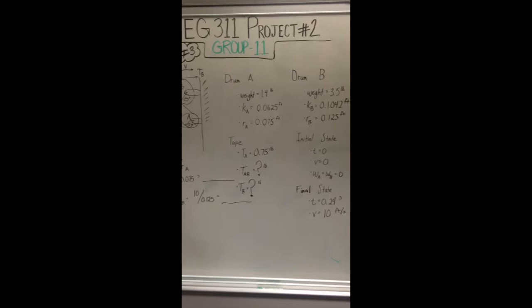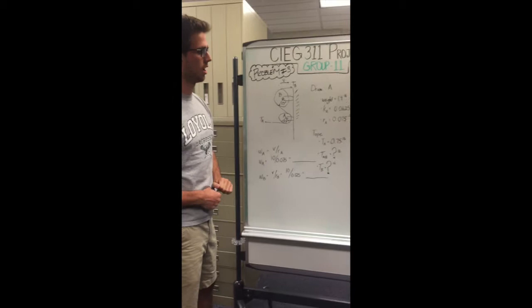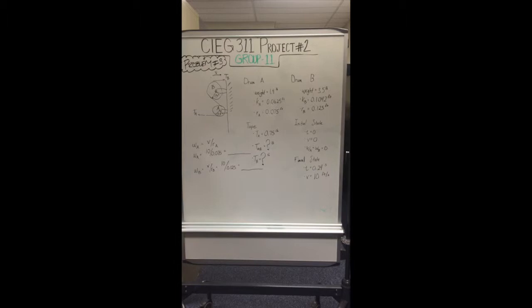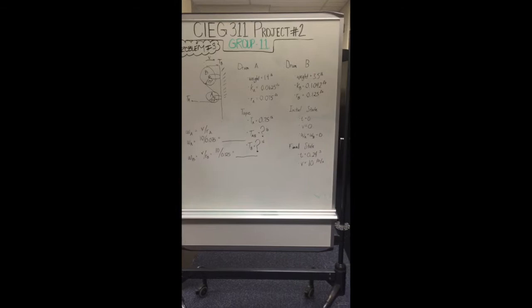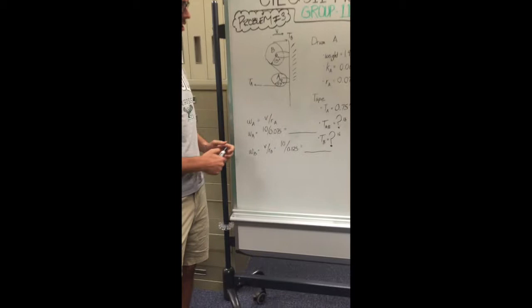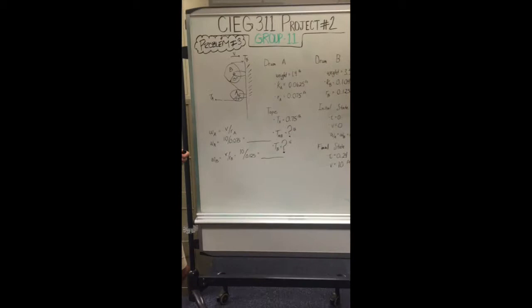For drum B, we have 3.5 pounds for the weight. The radius of gyration was 0.1042 feet and the radius of the drum itself was 0.125 feet. For the tape, the initial tension on TA here was 0.75 pounds and the initial state at time 0, the velocity was 0.